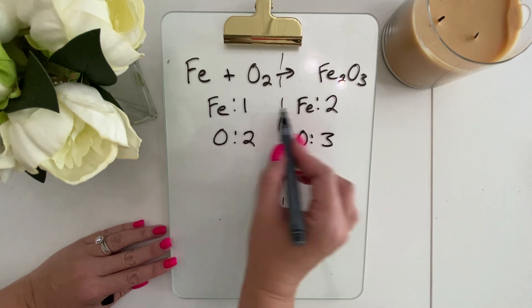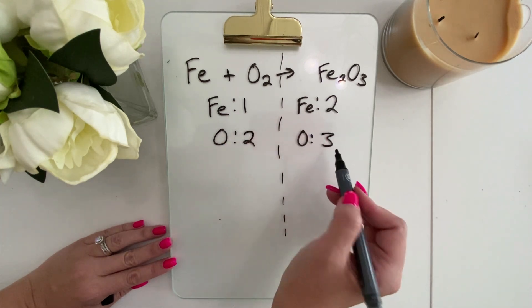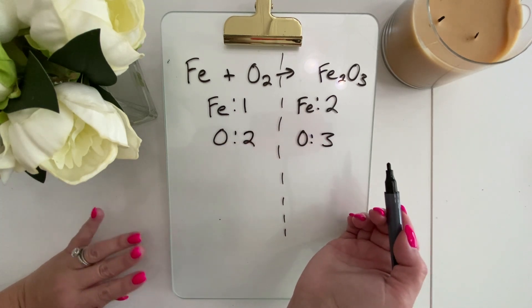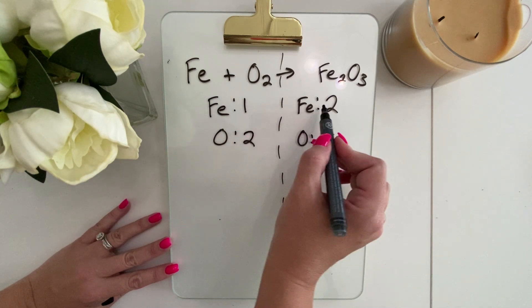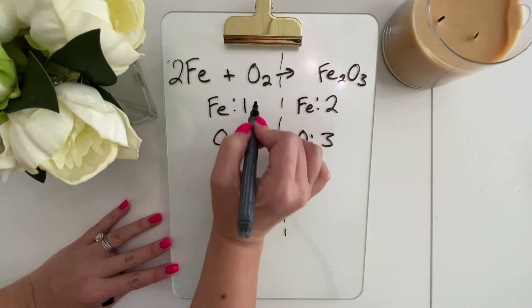So you can see that our iron and our oxygen are both not correct. So let's just start with iron really quick. We can make this one a two by adding the two in front.